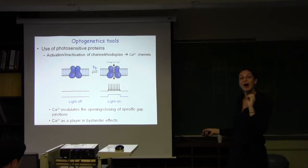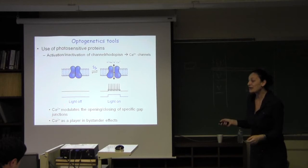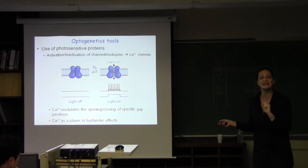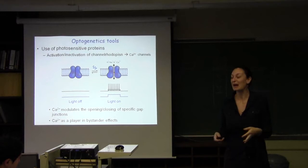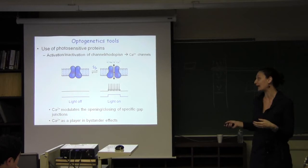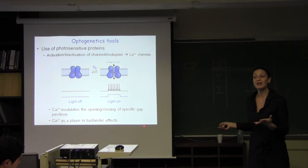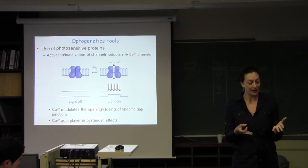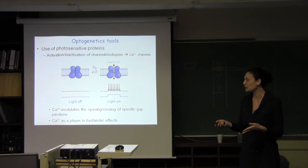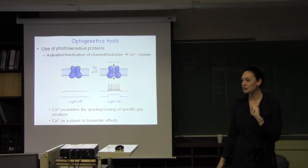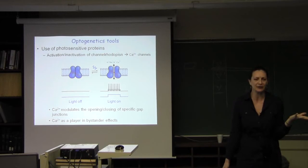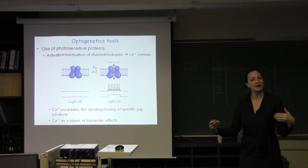Another type of photosensitive protein are channelrhodopsins. Those are channels that carry this chromophore that, once it's activated, let the channel be open. In contrast, you can choose to close the channel. For example, we are talking about ion channels like calcium channels. You can decide to open or close calcium channels just by switching on or off a specific incident light.